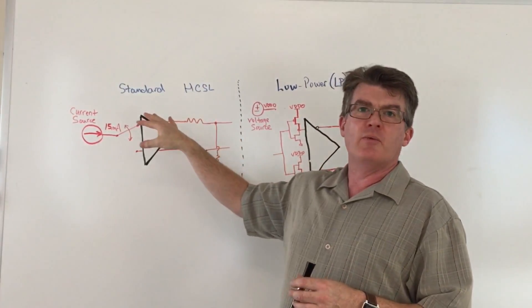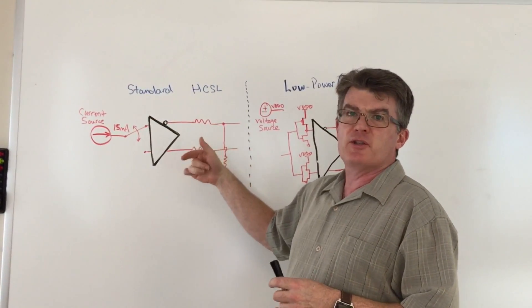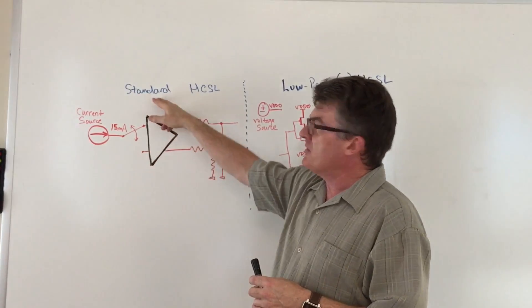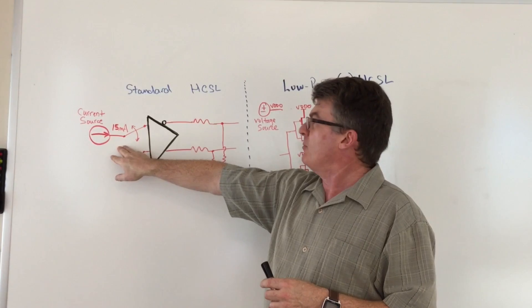But first we have to understand what standard HCSL outputs are. These are used to clock PCI Express systems for the most part, and the standard HCSL is basically a constant current type of output.